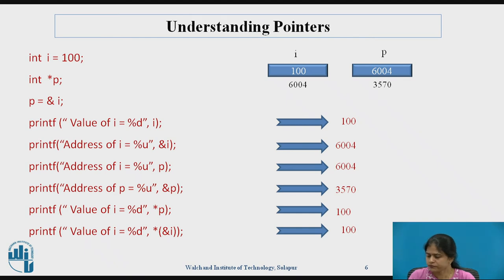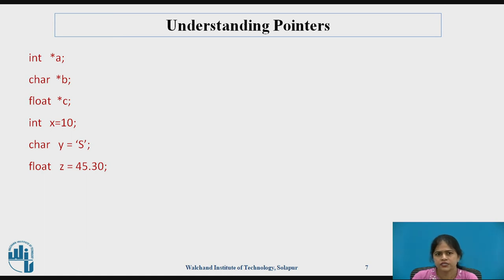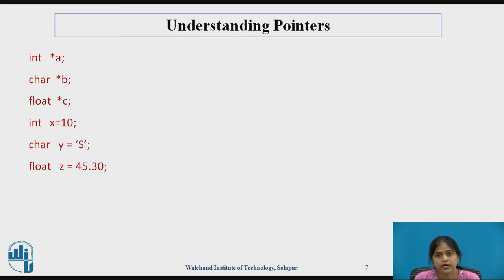In this way, we can use pointers in different ways. Now look at these declarations: int *a, char *b, float *c. These are different pointers holding addresses of different data type variables. For example, a is capable of holding the address of an integer, b is capable of holding the address of a character variable, and c is capable of holding the address of a float variable.